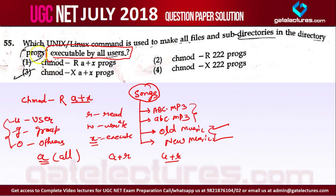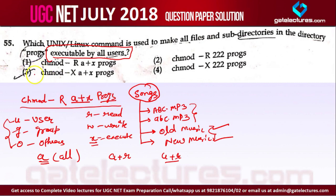So the command is 'a+x' applied to the 'programs' folder. You want to give the access of the programs folder to everyone with executable access recursively. The full command will be: chmod -R a+x programs. So the answer for this question is option one.